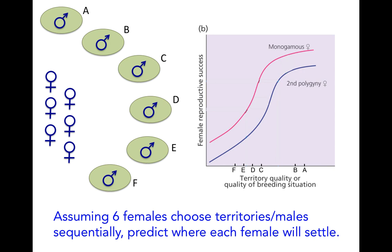What we can do with that is imagine a scenario where you have males with different quality territories and actually predict where females will settle, if you imagine females arriving sequentially in a habitat. In this particular example, the male on territory A has the highest quality territory, and then it goes down, with the male on territory F having the lowest quality territory. So the first female that arrives, if these are all unmated males, should choose male A because he has the best quality territory.